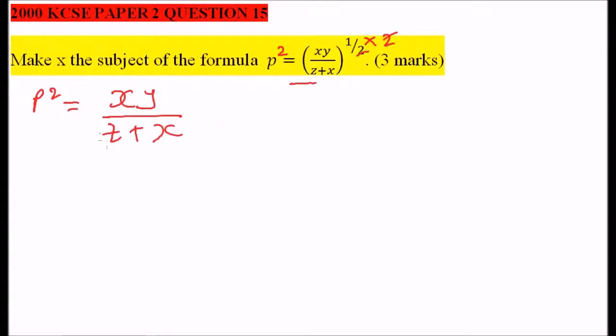Let's cross multiply. We multiply z plus x by p squared. This gives us p squared z plus px equals xy.